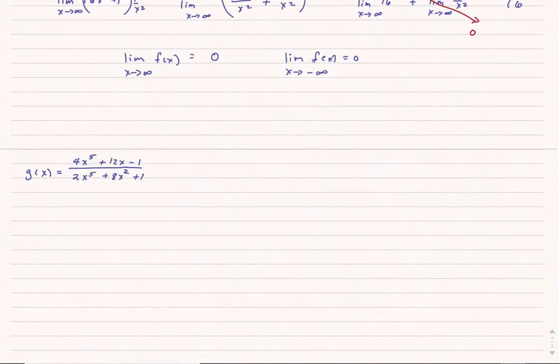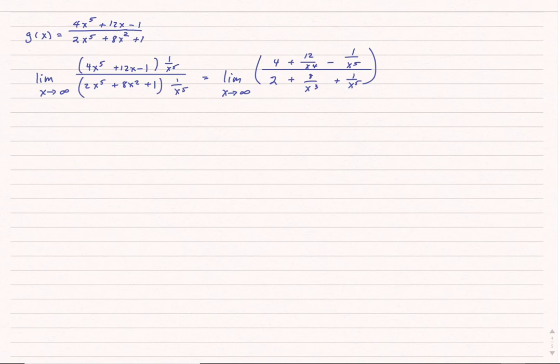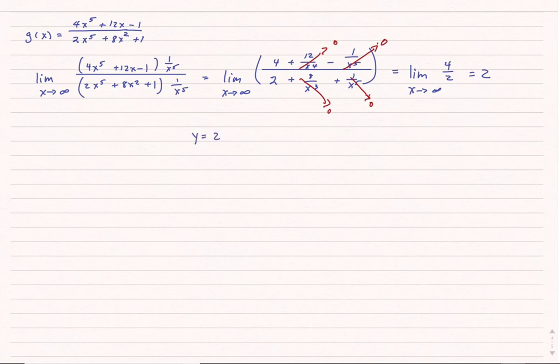Before moving on, I explicitly note the first equation has a horizontal asymptote at y equals 0. For the second example (equal exponents), I multiply numerator and denominator by 1 over x to the 5th. As the limit goes to infinity, most terms go to 0, and whether approaching positive or negative infinity, the limit equals 4 divided by 2, which is 2. So there is a horizontal asymptote at y equals 2.